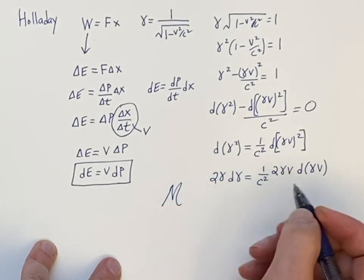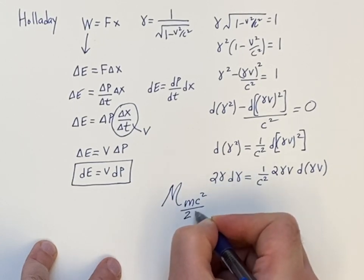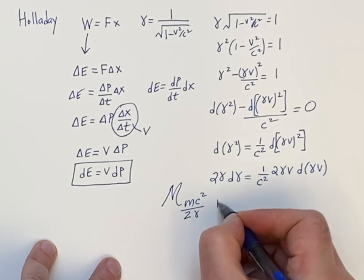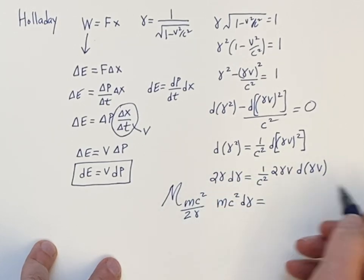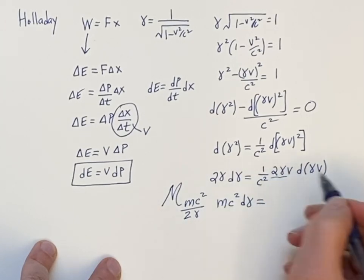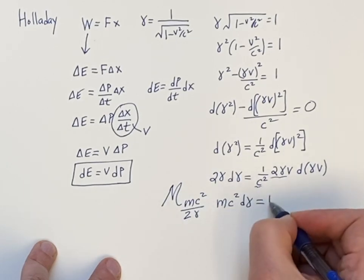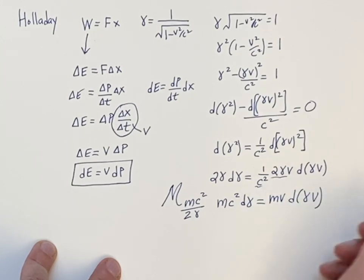All right, now we're going to multiply both sides by MC squared over 2 gamma. So the 2 gamma will cancel on the left, and I'll just have MC squared. On the right-hand side, 2 gamma is going to cancel, C squared is going to cancel. I'm going to have just the M. So that's MV d gamma V. And we're almost finished now.